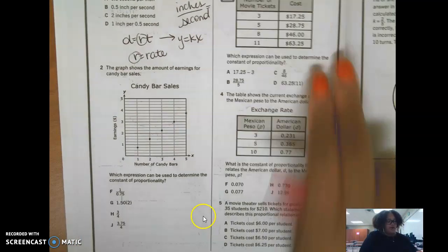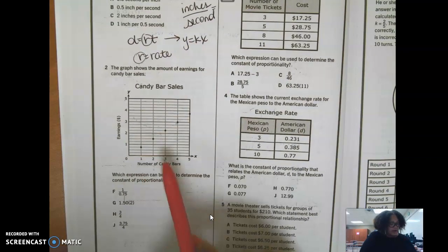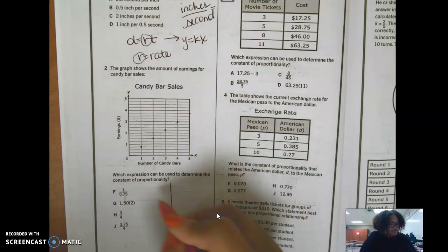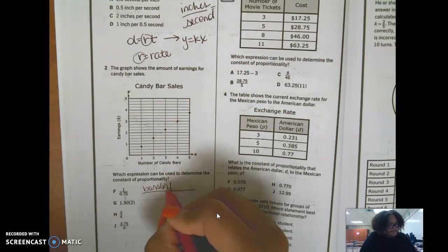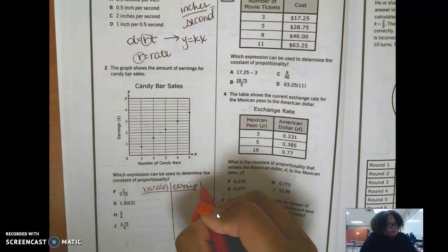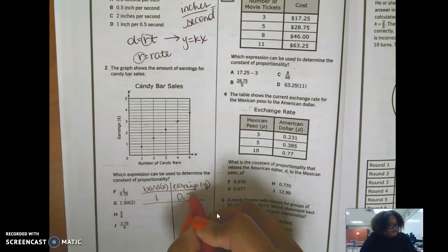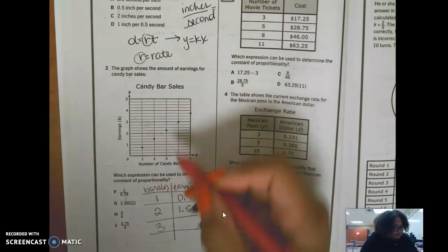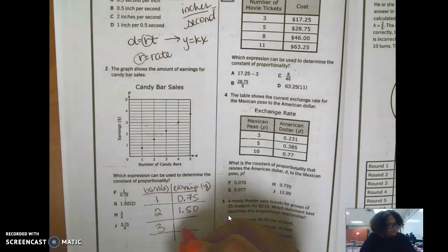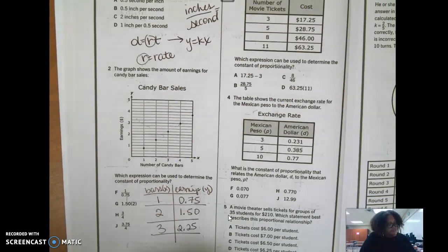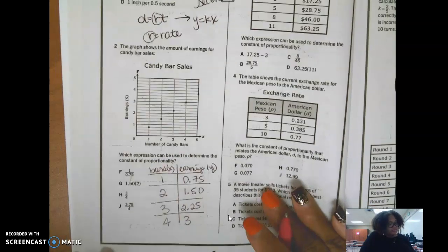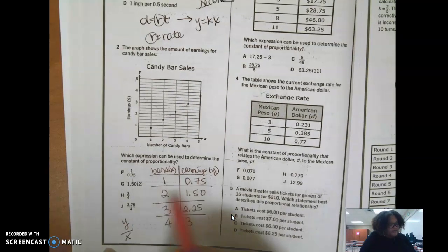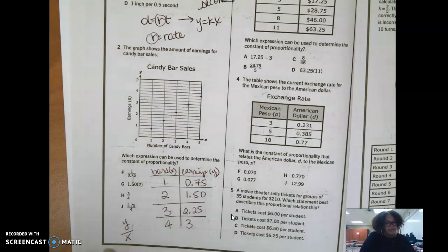The graph shows the amount of earnings for candy bar sales. So it's going in a straight line. And it looks like for every one candy bar, it's 75 cents. For every two, it's $1.50. So I need to make a table. Bars, x, earnings, y. So one, and I'm getting 75 cents. Two, and I'm getting $1.50. Three, and I'm getting $2.25. Is that correct? $2.25, that is. Four is $3. Which expression can be used to determine the constant of proportionality? Y over x. So take any of these y's and then divide it by x. It may be a fraction. It may be a decimal.